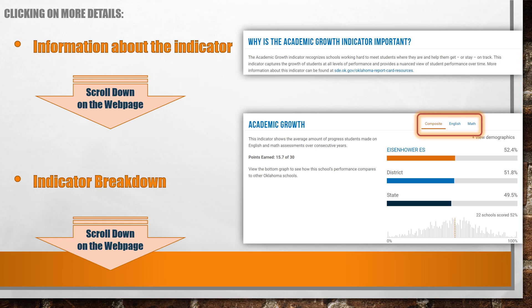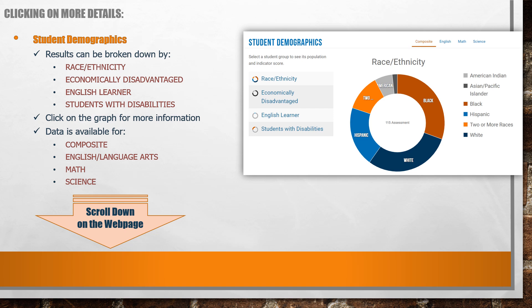By clicking on the graph, you can compare higher and lower ranked schools in Oklahoma. As you scroll down, you will see information about student demographics. Results of the indicator can be broken down by clicking on any of the subject groups on the left, including race and ethnicity, economically disadvantaged, English learners, and students with disabilities. Click on any section of the graph to see the student groups, percentage of the school population, and its indicator score. Data for composite English language arts, math, and science is available.